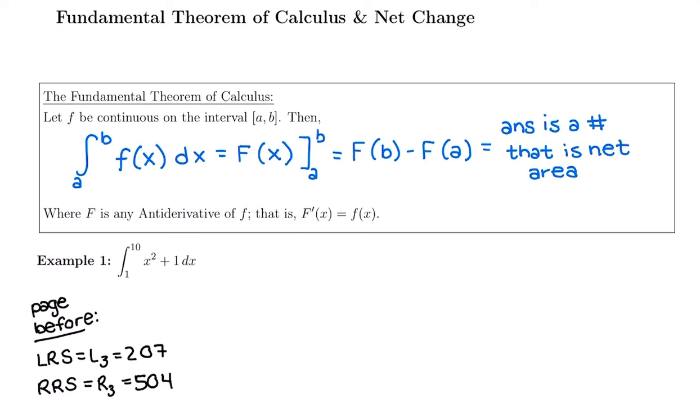So on the page before, we just used 3 subintervals and did a left Riemann sum of x squared plus 1 on the interval from 1 to 10, and a right Riemann sum for that same function on that interval. Our left Riemann sum was 207, our right Riemann sum was 504. They pretty much completely disagreed with each other on what the area under the curve was because we didn't use enough subintervals, which still felt like a lot of work just having 3 subintervals. So now let's find the perfect answer without having to use a Riemann sum.